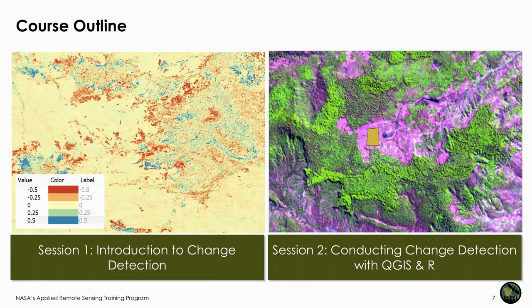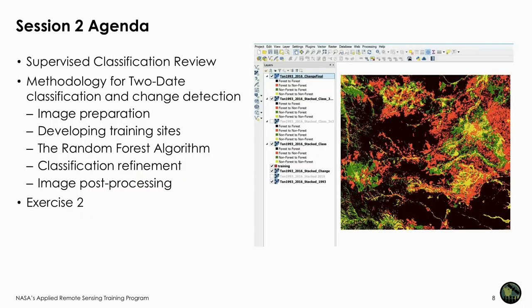Last week, we did an introduction to change detection and a short exercise using QGIS. This week, we'll be conducting another kind of change detection with QGIS and R. Today's agenda includes an overview of supervised classification, then describing methodology for two-date classification and change detection, including image preparation, developing training sites, a discussion on random forest, classification refinement, and image post-processing.